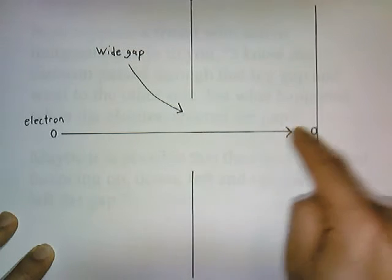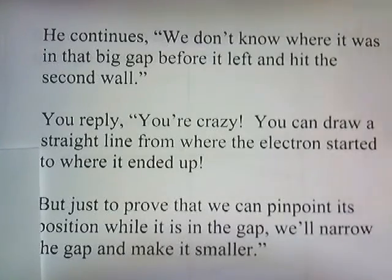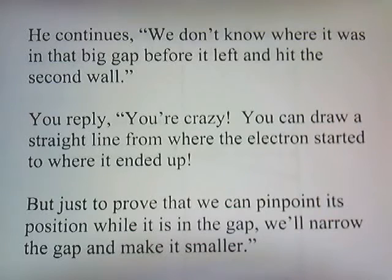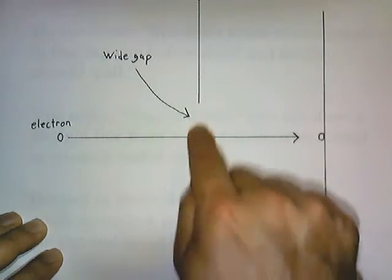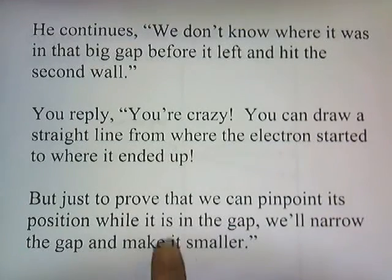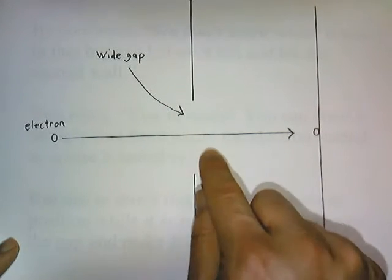Maybe it moved here and then went like that. That's a pretty imaginative thing. But you reply: you can draw a straight line from where the electron started to where it ended up. He's saying that the electron, when it entered the gap, may have gone through here and bounced up and down. But we don't know where the electron was when it entered the gap — it could have been anywhere along here in the gap. But you can draw a straight line from where the electron started to where it ended up. So your argument is that we have to know that when it entered the gap, it was right here.